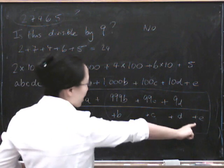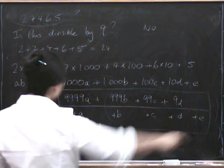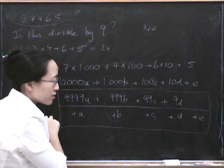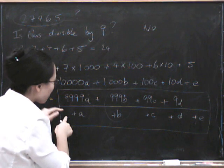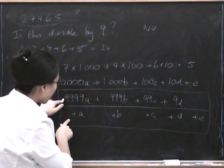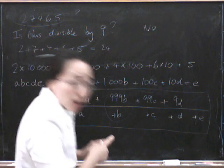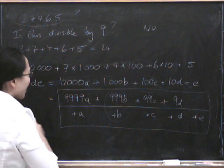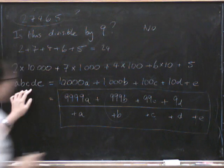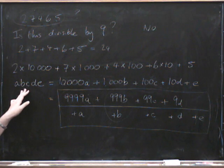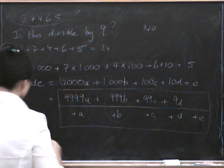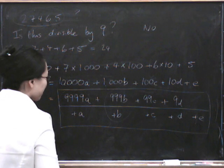So if the bottom line is divisible by 9, then the whole thing will have to be divisible by 9 because it will be a sum of something divisible by 9 and something else divisible by 9. But also, if the bottom line is not divisible by 9, then this thing over here can't possibly be divisible by 9. So let's see if we can make that precise.